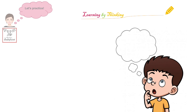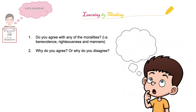In the last activity, I would like you to do some reflective thinking. Do you agree with any of the moralities I mentioned? That includes benevolence, righteousness, and manners. Try to explain why you agree or disagree. Try to recall what each morality means and the reason why Chinese people think the specific morality is important. This is an open question and there is no right or wrong — the goal is only to make sure you understand the concept. You can pause the video for a few minutes and think about your own opinion, then share your idea with your friends and family.